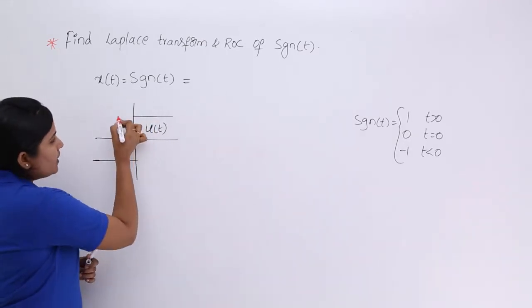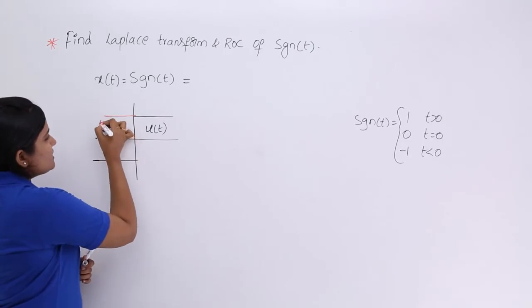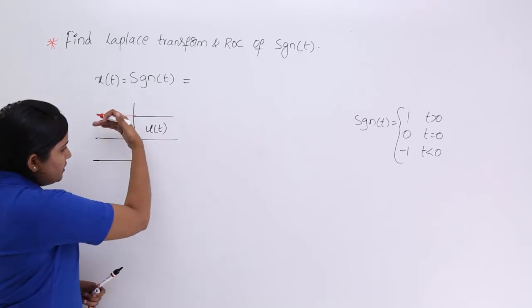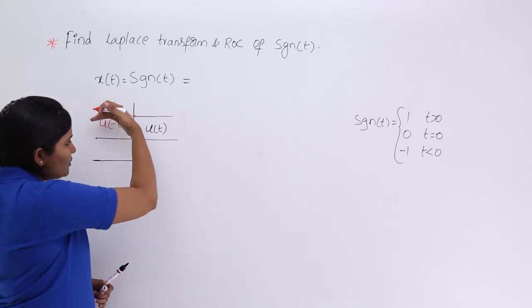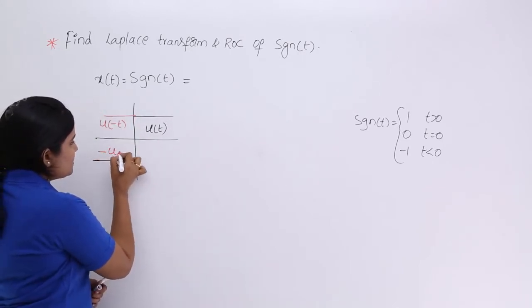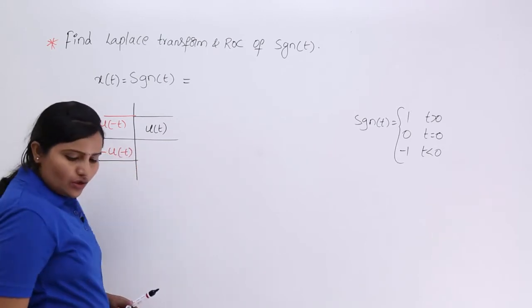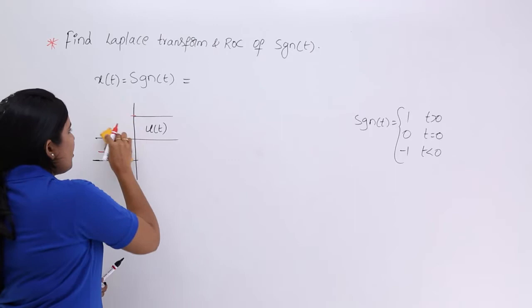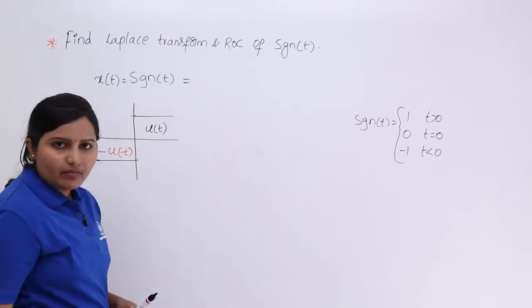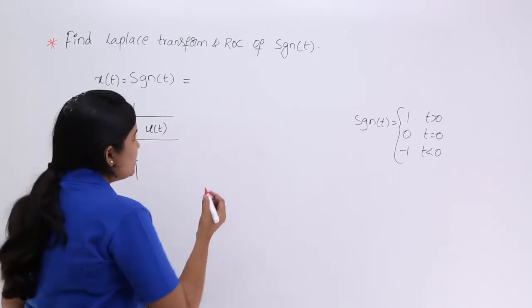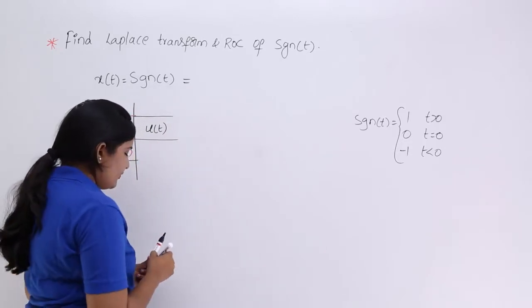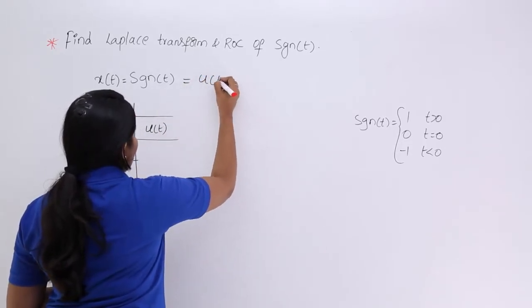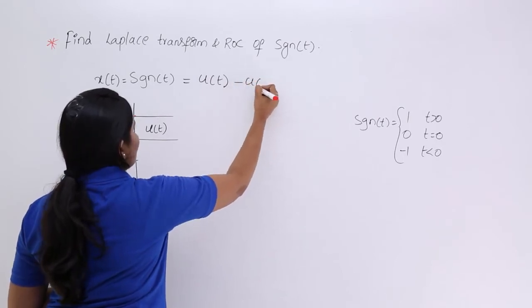For example, if you are having like this, this is u(minus t), but in signum function you are having reversed u(minus t), that means minus u(minus t). We can say signum function is the combination of u(t) and minus u(minus t). From this knowledge we can write signum of t is equivalent to u(t) minus u(minus t).